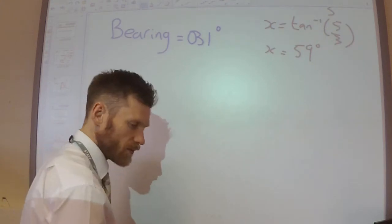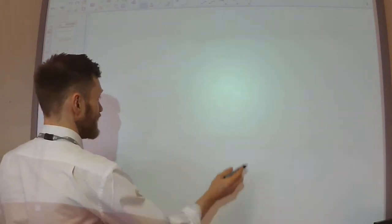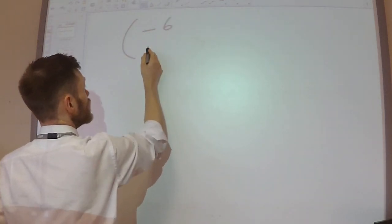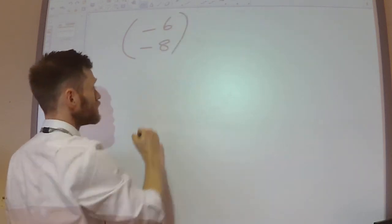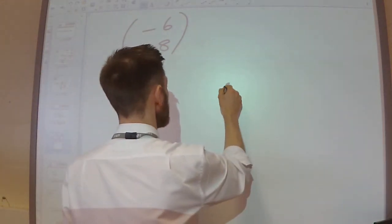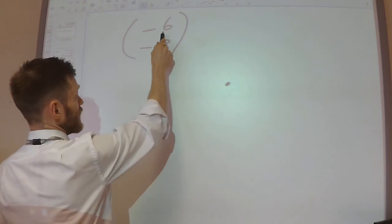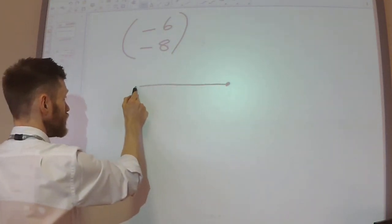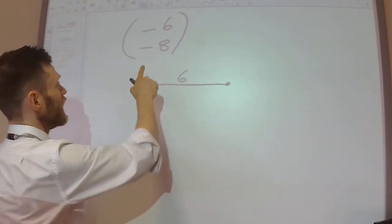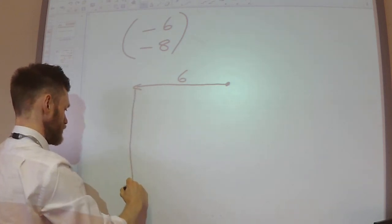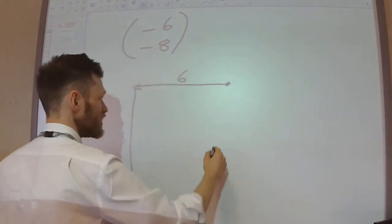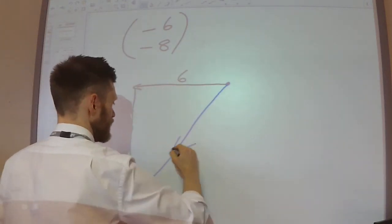Let's look at a slightly more complicated one. What if I wanted to work out the magnitude and the bearing of the vector (-6, -8)? Let's try and picture what's going on here. That's my starting position. I'm going 6 squares to the left, or 6 squares to the west, and then I'm going to go 8 squares down, or 8 squares to the south. So my overall result is that vector.